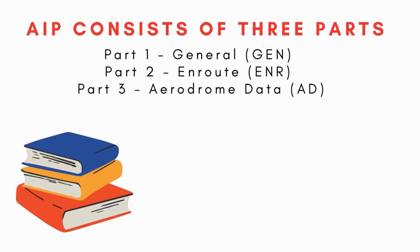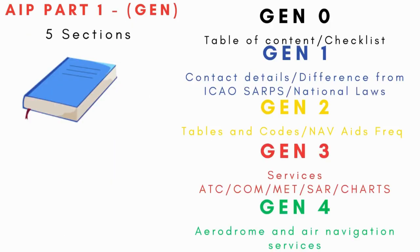The AIP consists of three parts. Part 1 is General, containing information such as table of contents, checklist, record of AIP amendments and supplements, contact details of aviation authorities, national regulations and requirements, conditions for commercial flights in national airspace, summary of national regulations and international agreements, differences from ICAO standards, and information regarding air traffic services, communication, meteorological services, search and rescue, and air navigation services.